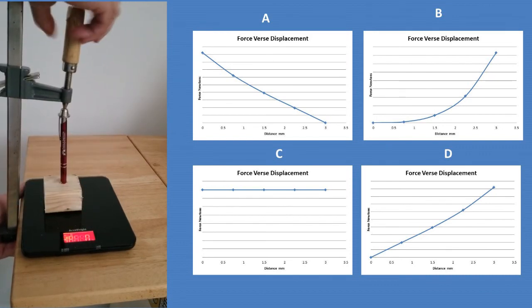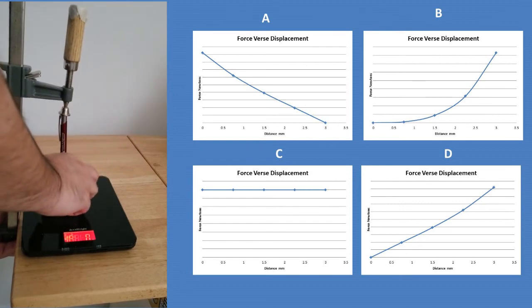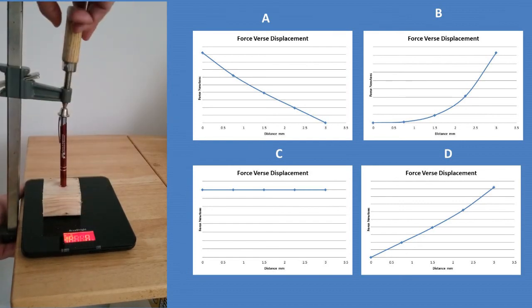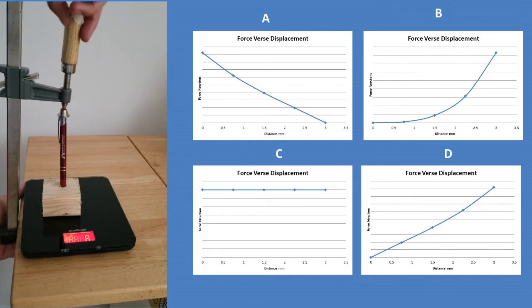Every one revolution of the clamp equals 1.5 millimeters of travel. We take a note of the force at each half turn, or 0.75 millimeters of travel, and plot the data.